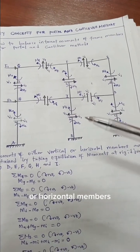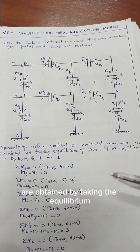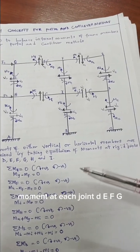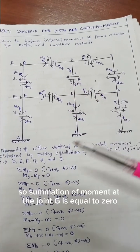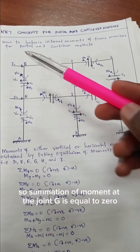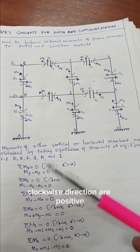To obtain the moment of vertical members or horizontal members, we take the equilibrium point at the joints D, E, F, G, H, and I. So summation of moment at the joint G is equal to zero, because the upward direction is positive and the downward direction...